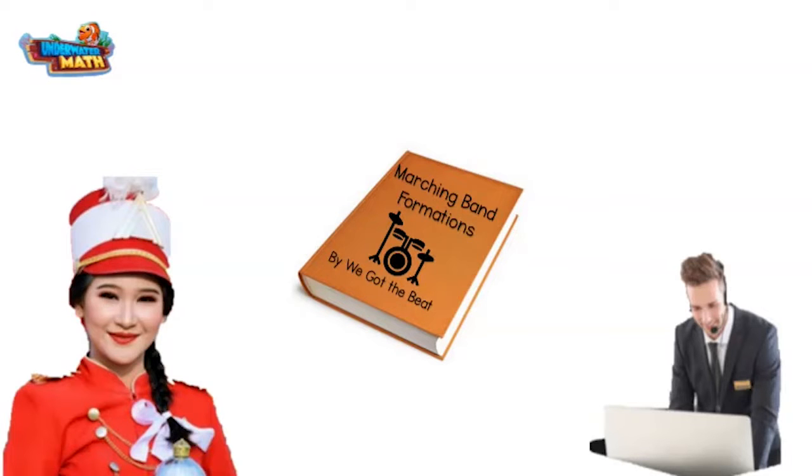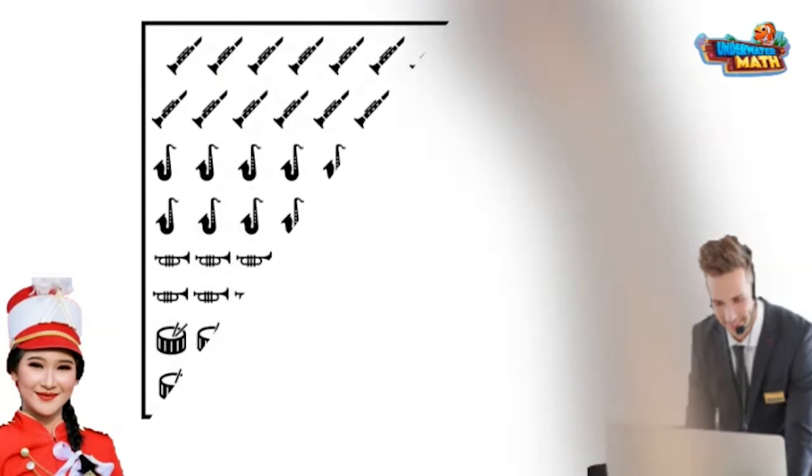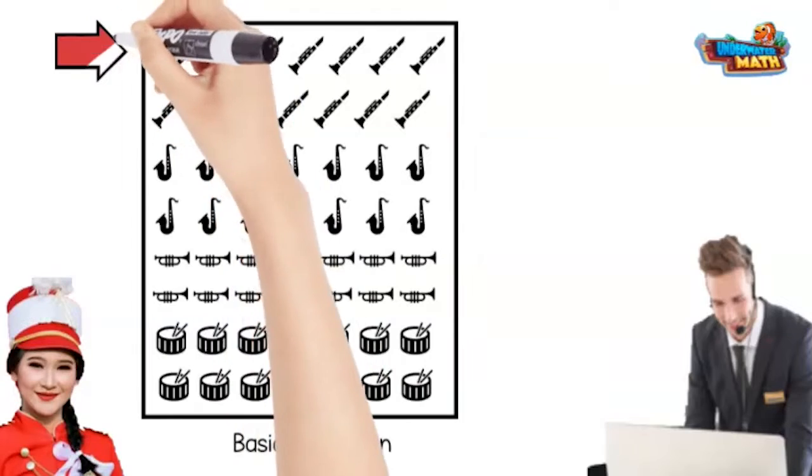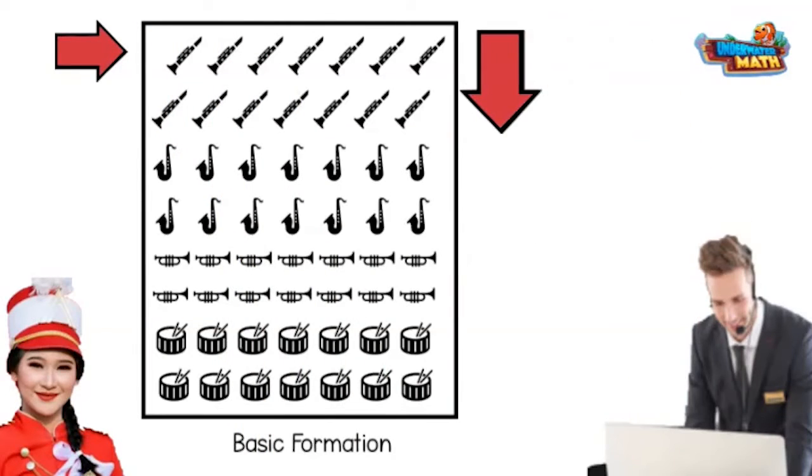Join us. This formation here is pretty simple and a great way to start the season. We can use it in parades. How can we figure out how many people total we need for this formation? Well, the picture shows seven people across and then eight rows down. That is a multiplication problem. We could figure out the answer of seven times eight.